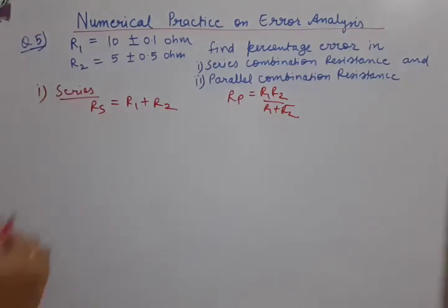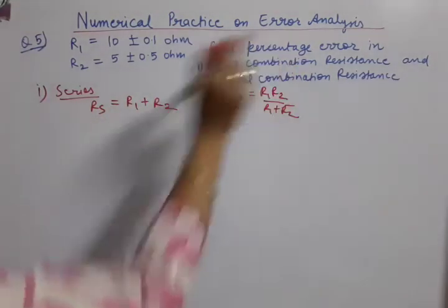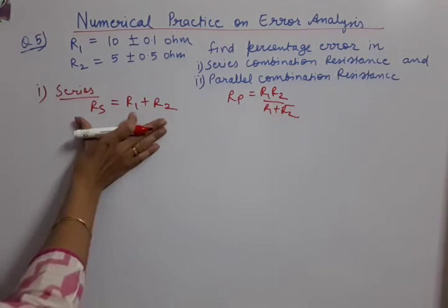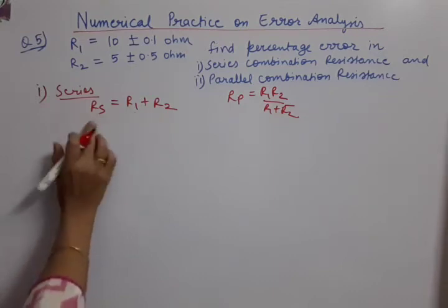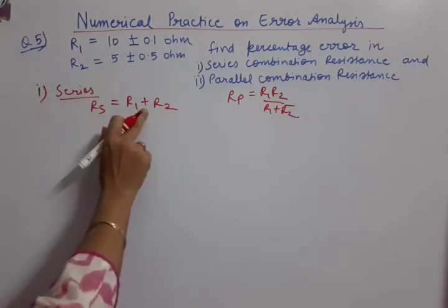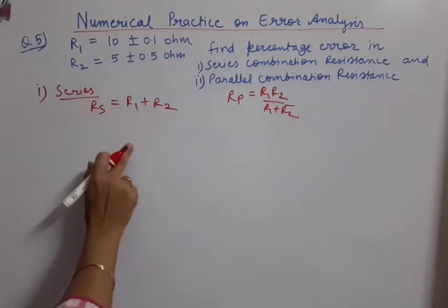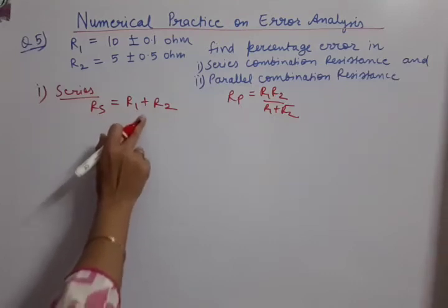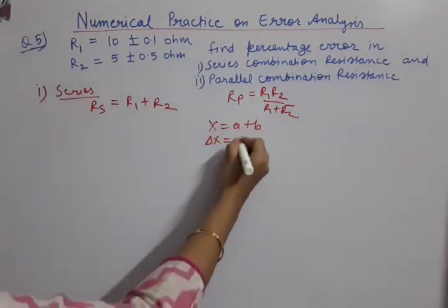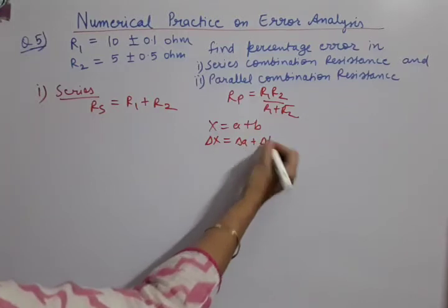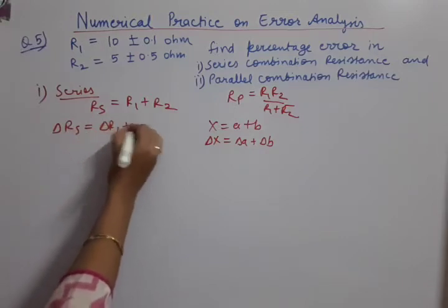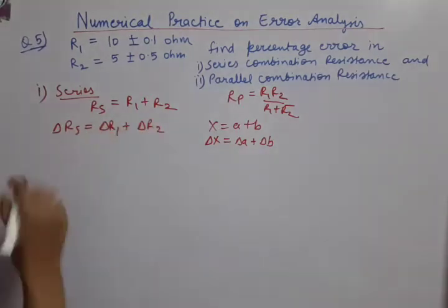In the same manner, if parallel answer was asked, so parallel answer was R1 R2 upon R1 plus R2. These formulas, these two formulas you should know. I am solving first of all about series combination. Percentage error I have to solve. Now, as is our procedure in the error analysis, first of all, we have to see operation. Which operation is this? Addition. For addition, how to write the error expression? So, if addition is given, that means x equal to A plus B, we write absolute errors.